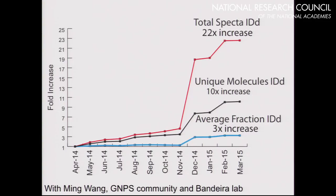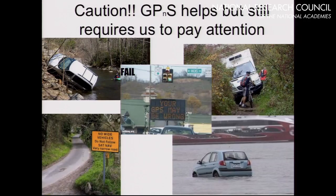We released the platform to the public in April 2014, and since then the average fraction ID has grown threefold, the average unique number of molecules identified has grown tenfold, and the total number of spectra identified has increased 22-fold.